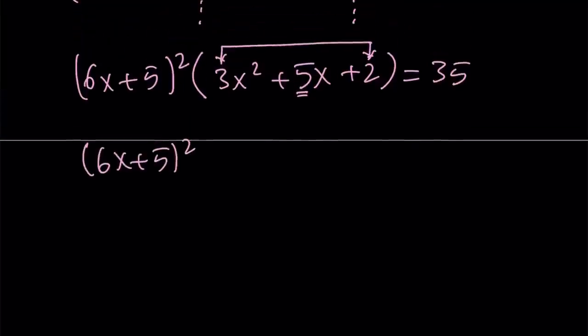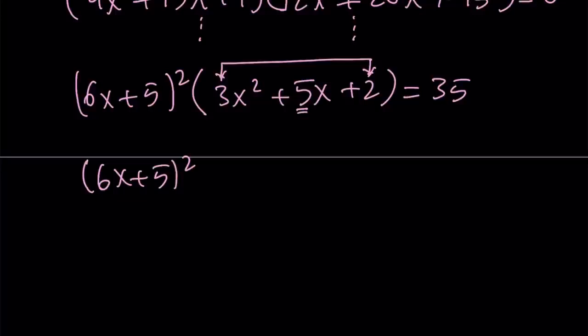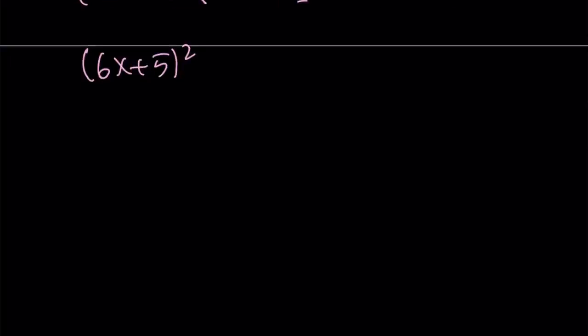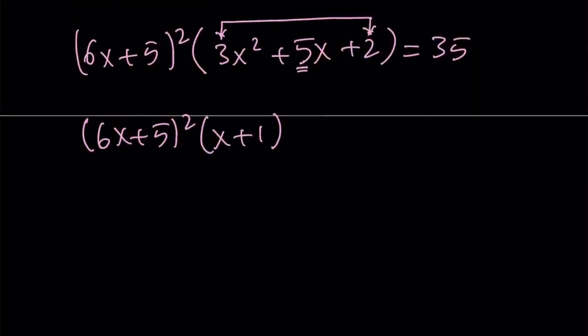So we can write this as 6x plus 5 quantity squared. I'm sorry, I didn't show that clearly. But yeah, 3 plus 2 is equal to 5. Therefore, x plus 1 is going to be a factor. So what happens to the other factor? Well, you can easily derive that. It's going to be 3x plus 2. Awesome. And this is equal to 35.